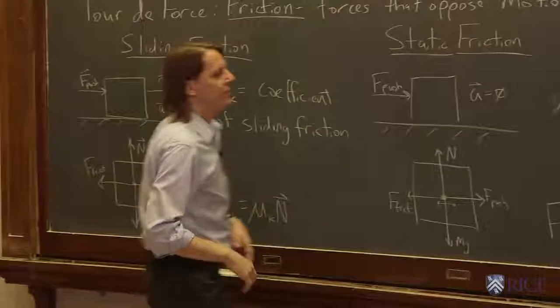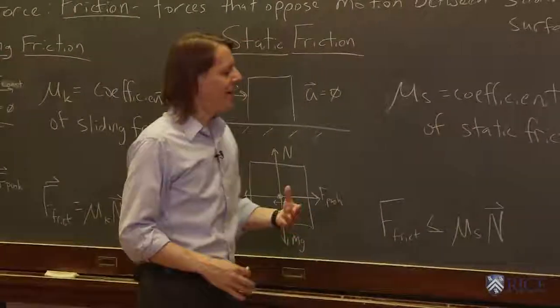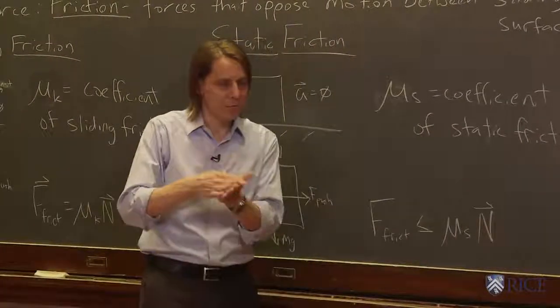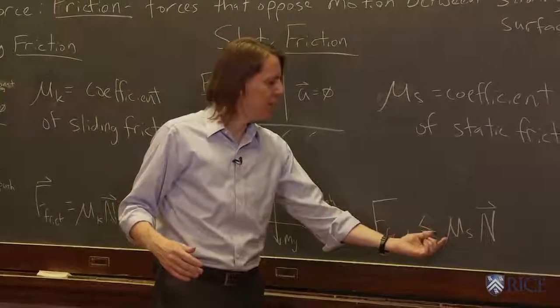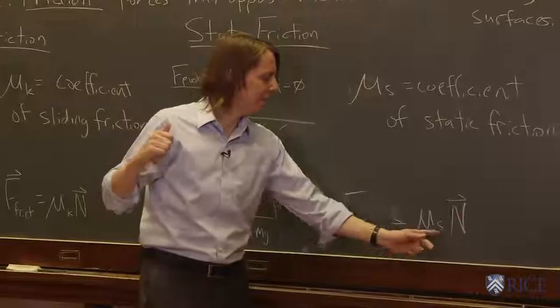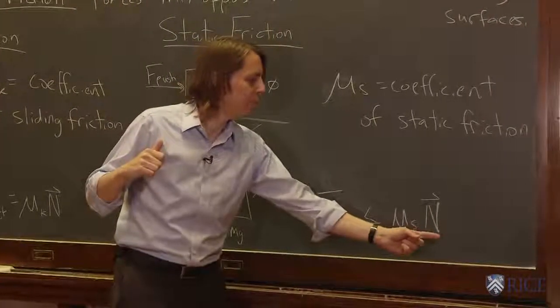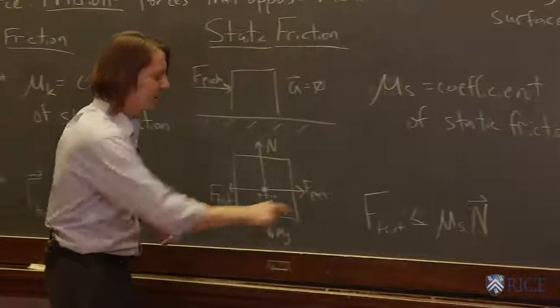Where μs is the coefficient of static friction. And like the kinetic case, it is unitless. Like the kinetic case, it's really low when you have something really slick, like ice. It's really high when you have something like a cinder block on wood. And also like the kinetic, it's simply a coefficient that modifies the normal force to get the friction force.